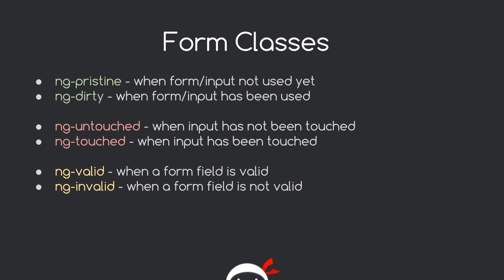There are three pairs of classes. The first pair is ng-pristine and ng-dirty. ng-pristine is applied to our form or any input field that has not yet been used — no text has been entered, it's pristine. When we type some text into that field or the form itself, it gets the class ng-dirty instead, so we know a user has entered something.